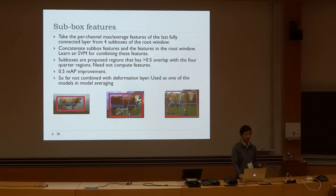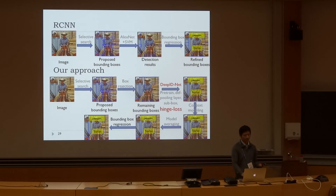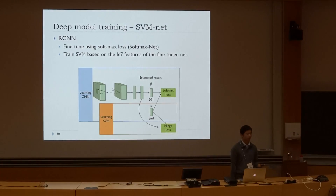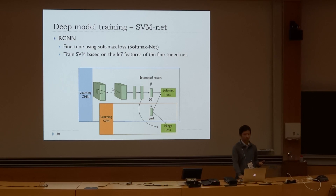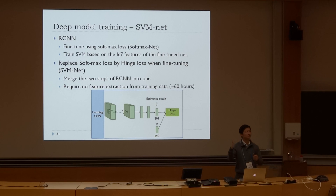For the sub-box features, you can read the details in our paper. For hinge loss, in the RCNN approach you have two steps: first, fine-tune your deep models; second, keep the models fixed, extract features, and learn your SVM. In our approach, we replace the softmax loss with hinge loss, so the two steps are merged into just one step. In this way, we can save the feature extraction time, which costs about 60 hours.